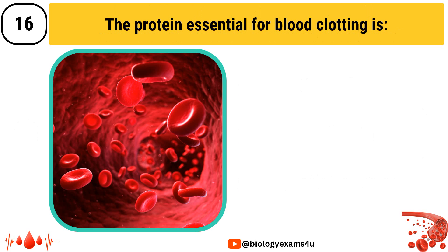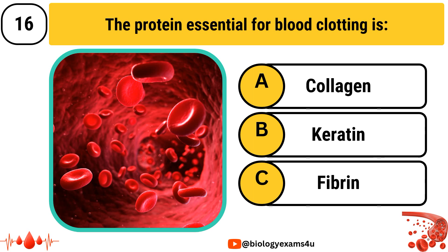The protein essential for blood clotting is: Option A: Collagen, Option B: Keratin, Option C: Fibrin.